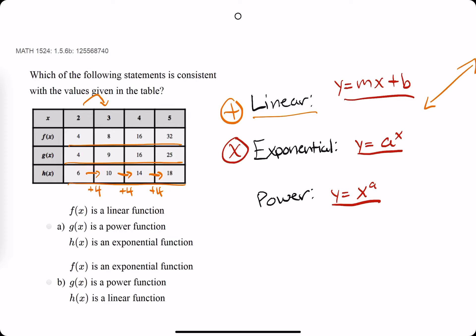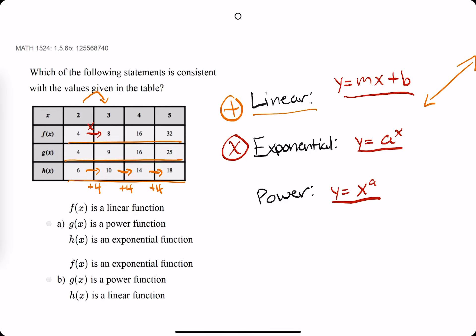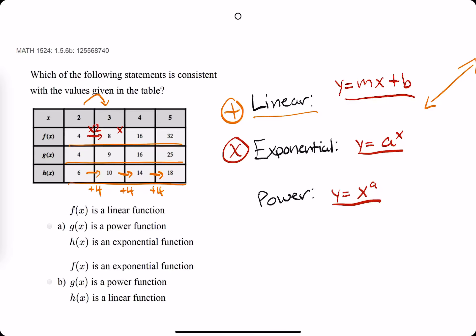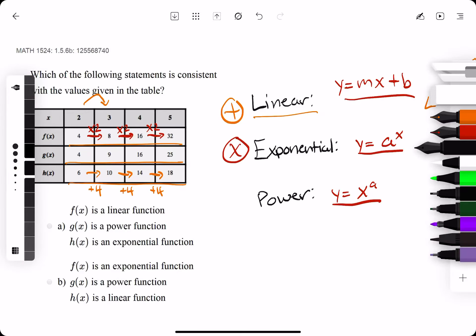So when we look at f, we go from 4 to 8, so it's times 2. Assuming f is the exponential function, we should be multiplying by 2 every time. So 4 times 2 is 8. 8 times 2 is 16. It's looking good. 16 times 2 is 32. So just like that, we confirmed that f must be our exponential function.